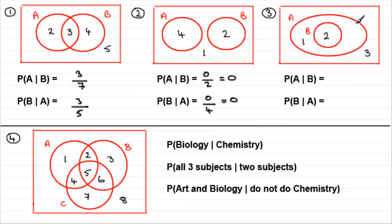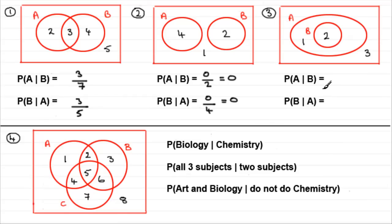In diagram three, this is a situation where all the people doing biology also do art. We've got one person doing art only, two people doing biology, and three people doing neither. We often call B a subset of A — it's within A. You might like to pause the video and try these two examples.